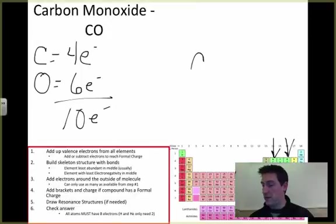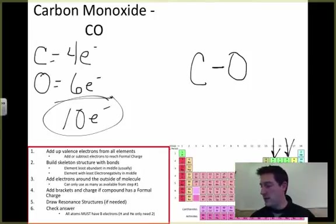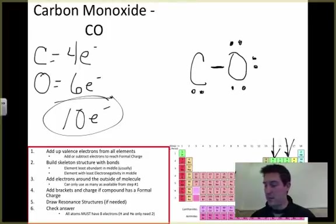Now obviously nothing's at the center, they're just bonded together. When I put that bond in, I've used up two. I can use 10, so I've got two there. Let's start putting some around here. Three, four, five, six, seven, eight, nine, ten. I've got a problem because I ran out of electrons and carbon is not happy.